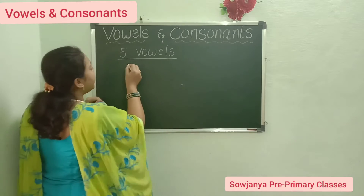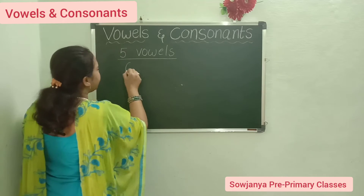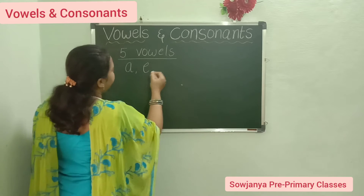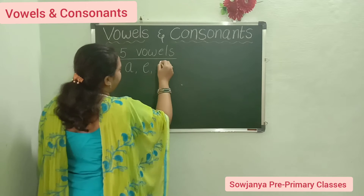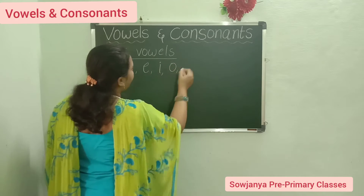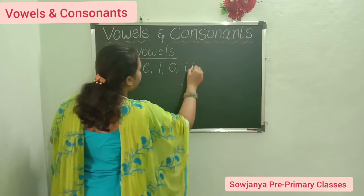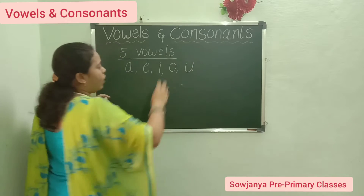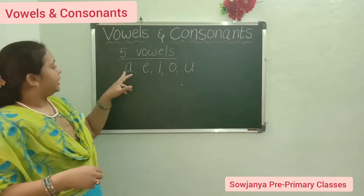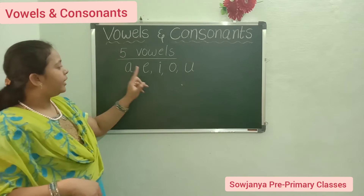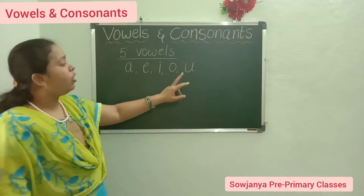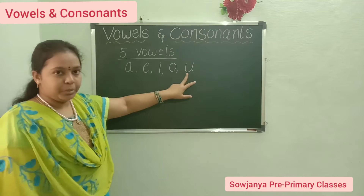What are their names? A, E, I, O, U. What are the names of the vowels? A, E, I, O, U.